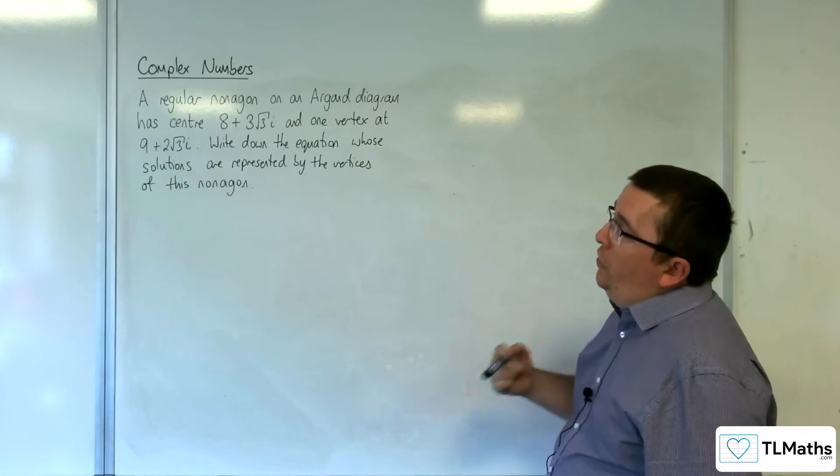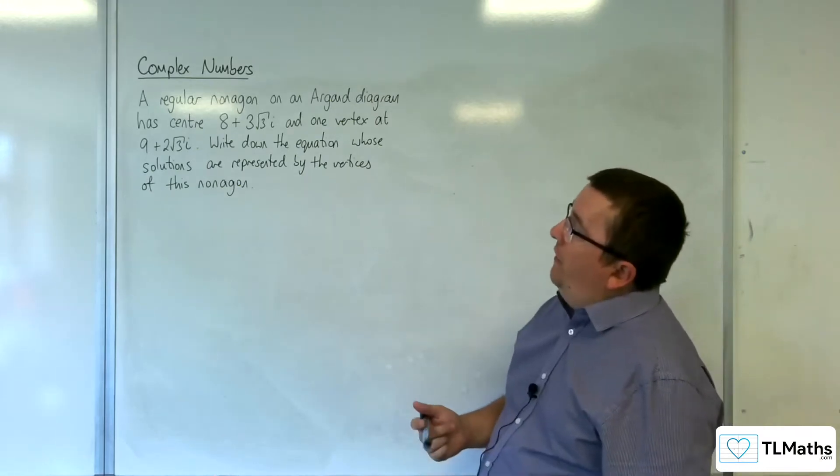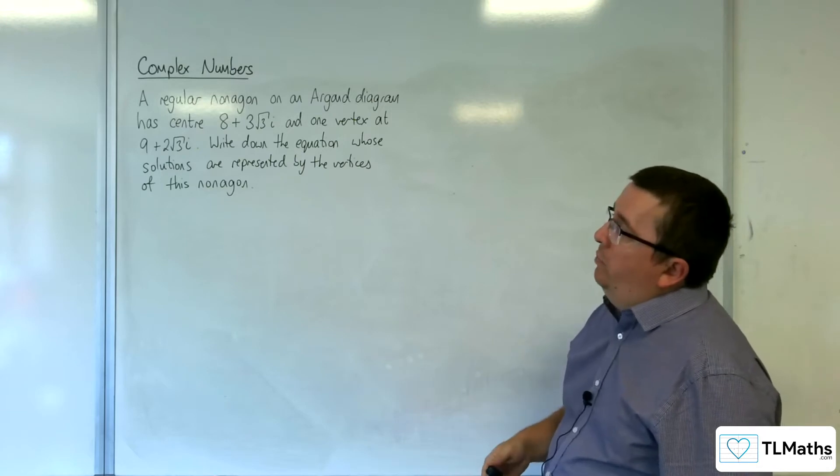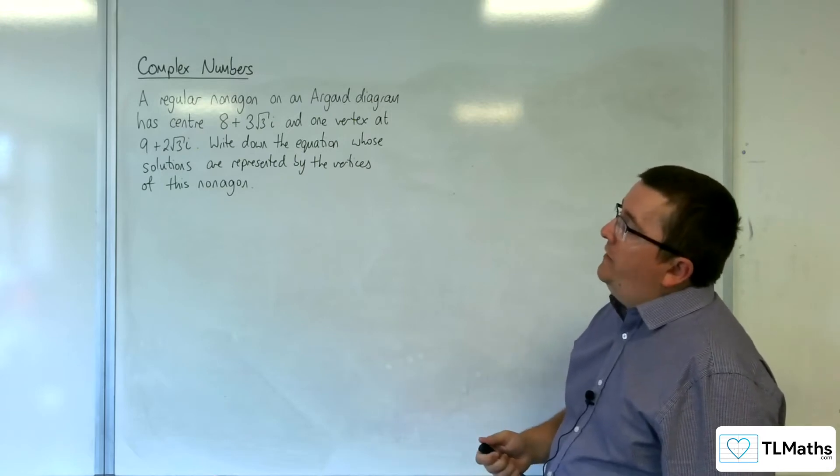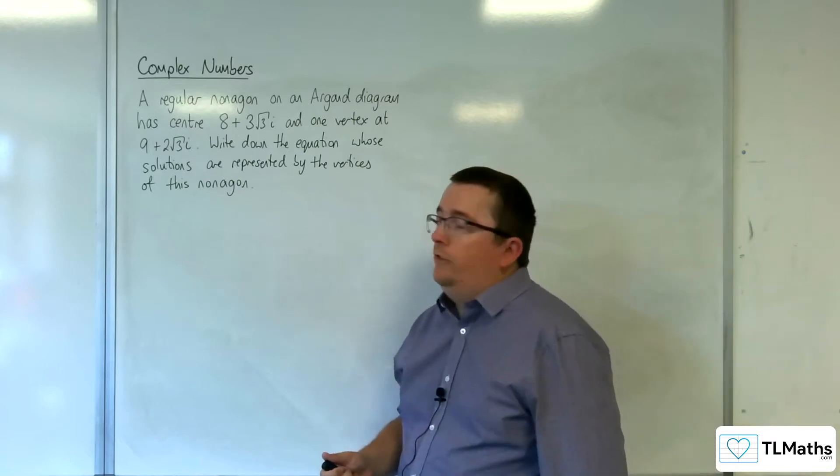In this problem, we have a regular nonagon on an Argand diagram has center 8 + 3√3i and one vertex at 9 + 2√3i. Write down the equation whose solutions are represented by the vertices of this nonagon.